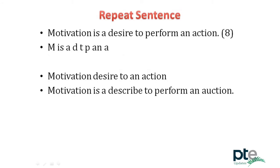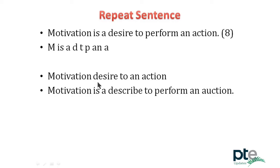For example, with the sentence 'motivation is a desire to perform an action,' note down the first letter of every word: M, I, A, D, T, P, A. Then reproduce it from those notes. If you don't remember all the words, reproduce the ones you heard in proper fluency — you can say 'motivation, desire to an action' rather than hesitating repeatedly. Don't take pauses trying to recall — if you heard only three words, reproduce those three in sequence with good fluency rather than repeating and stumbling.